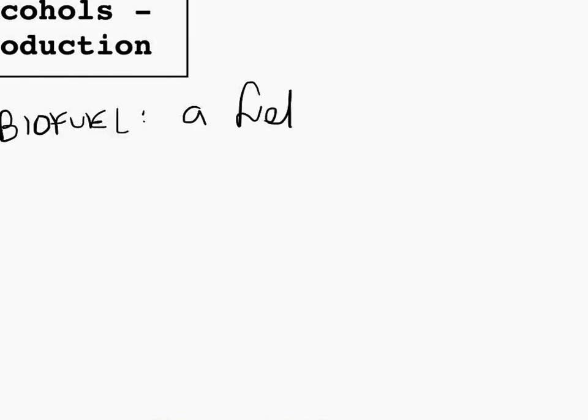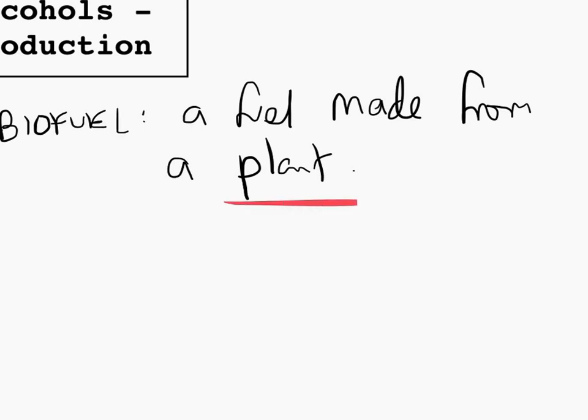I've included these two definitions in this video because they're very specific in terms of what they'll give you marks for. So biofuel is a fuel made from a plant. They'll give you a mark for that. So this word plant is needed. The word from is needed as well. So a fuel made from a plant.